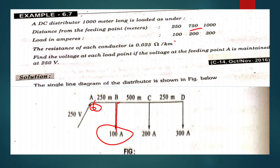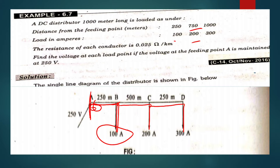At 750 meters distance we have 200 amps of tapping. So we have a starting point at 250 meters with 100 amps tapping, and between B and C the distance is 500 meters. At the 1000 meter end point we have one more tapping of 300 amps.